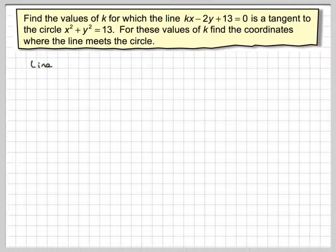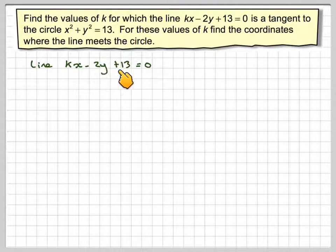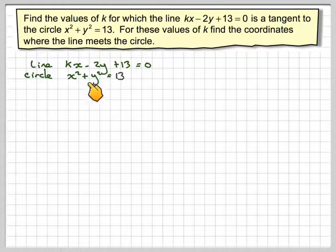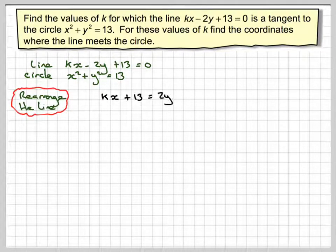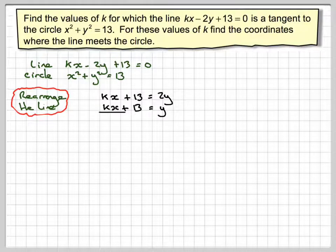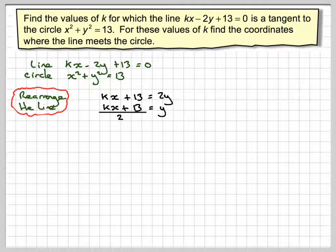So we've got the line kx minus 2y plus 13 equals 0, and the circle x squared plus y squared equals 13. If we rearrange the line and make y the subject, we get kx plus 13 equals 2y, so y equals kx plus 13 over 2. We then substitute that into the circle in place of y.